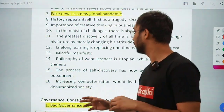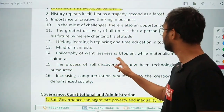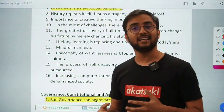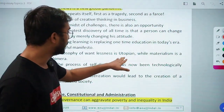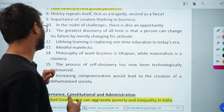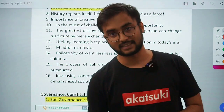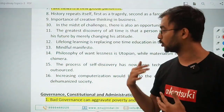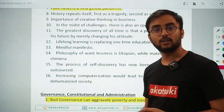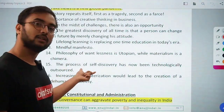'Philosophy of wantlessness is utopian while materialism is a chimera' — wantlessness means being unselfish or desireless, which is utopian — something we try to achieve — whereas materialism is a chimera. This topic was asked in the essay paper of UPSC Civil Services Examination 2021. 'The process of self-discovery has now been technologically outsourced' — we are so technologically dependent that this topic defines that well.